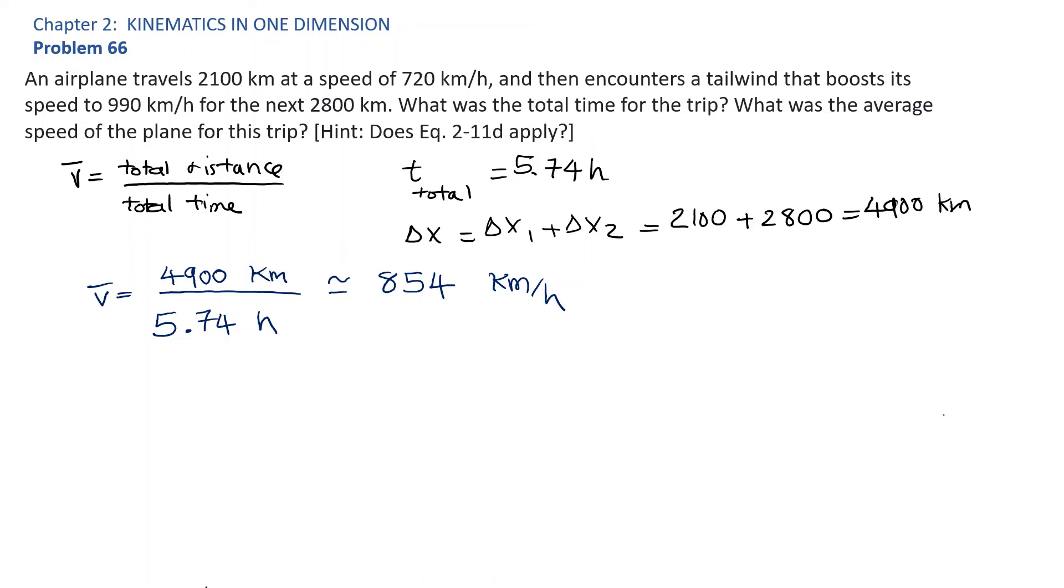Equation 2.11d reads as average speed is equal to V plus V0 divided by 2. This does not apply here.